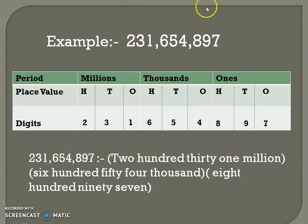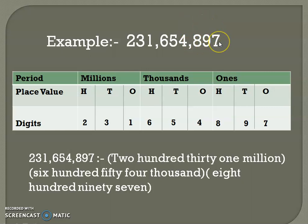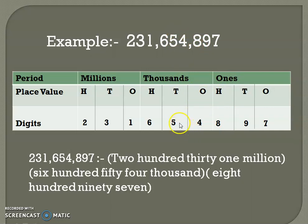Let's see one example — this number is having nine digits and is divided into three groups. This is the millions period, then the thousands period, and this is the ones period. As I told you, each period has ones, tens, and hundreds place value. So seven is in ones, nine in tens, eight in hundreds — four in ones in the thousands period, five in tens, and six in hundreds.